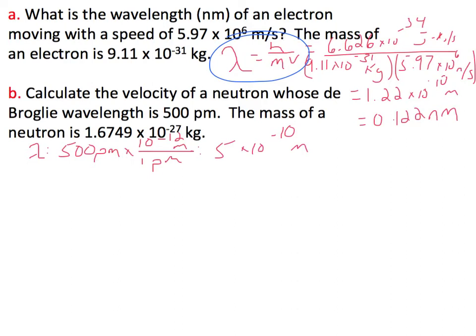So if we set this up again, we're just plugging in, we have 5 times 10 to the minus 10th meters, that's our wavelength shown here. We have that equal to Planck's constant, which is 6.626 times 10 to the minus 34th joule seconds.